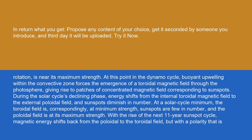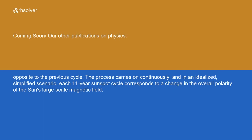With the rise of the next 11-year sunspot cycle, magnetic energy shifts back from the poloidal to the toroidal field, but with a polarity that is opposite to the previous cycle. The process carries on continuously, and in an idealized, simplified scenario, each 11-year sunspot cycle corresponds to a change in the overall polarity of the sun's large-scale magnetic field.